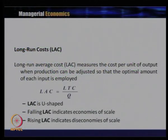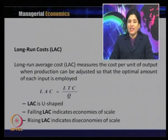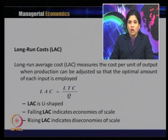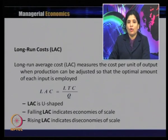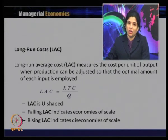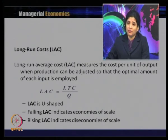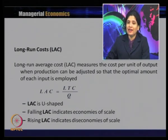The long run average cost curve measures the cost per unit of output when production can be adjusted so that the optimal amount of each input is employed. Long run average cost equals long run total cost divided by Q, where Q is the unit of output. The long run average cost curve is U-shaped. A decreasing long run average cost curve indicates economies of scale, and an increasing long run average cost curve indicates diseconomies of scale.